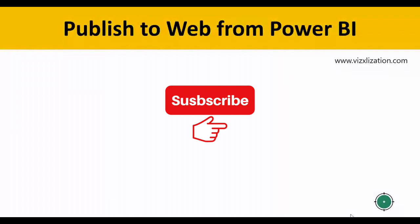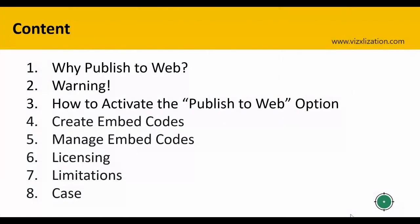For this particular tutorial we have eight different points. Point number one: why publish to web. Point number two: a warning — something really important to be aware of. Point number three: how to activate the publish to web option in Power BI. Point number four: create embed codes. Point number five: how to manage embed codes. Point number six: licensing. Next: limitations. And finally, a case study.